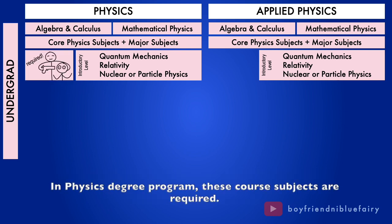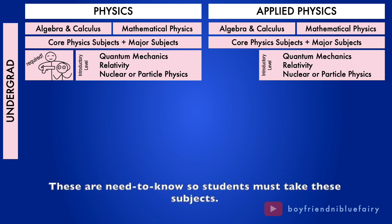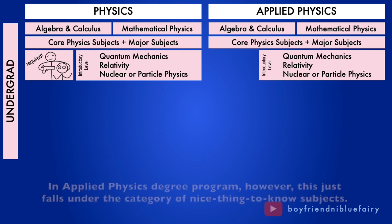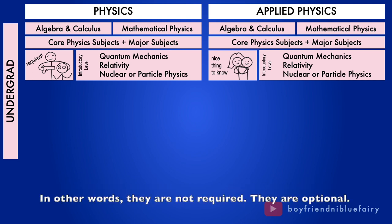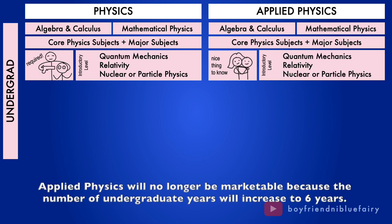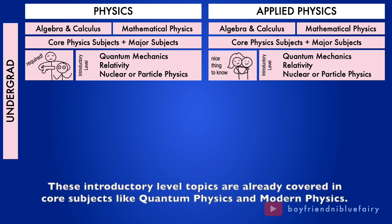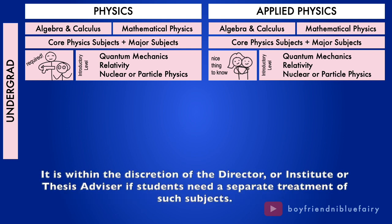This branch of physics serves to prove or disprove theories regarding standard unifying models and also other modern theories. In physics degree program, these core subjects are required. These are need-to-know so students must take these subjects. In applied physics degree program, however, these just falls under the category of nice-thing-to-know subjects. In other words, they are not required. They are optional. One of the practical reasons is that if these subjects are forced in the curriculum, applied physics will no longer be marketable because the number of undergraduate years will increase to six years. These introductory level topics are already covered in core subjects like quantum physics and modern physics.